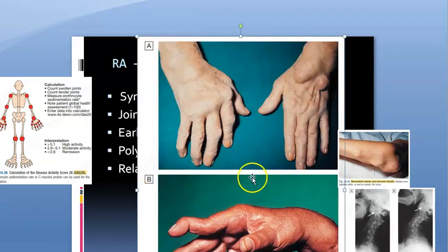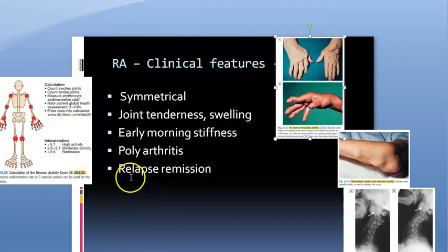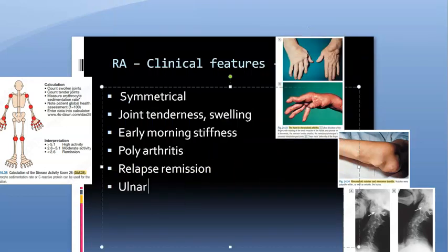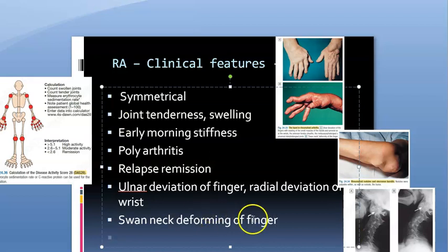So to summarize for the hand: there is ulnar deviation of the fingers and radial deviation of the wrist. There is also swan neck deformity of the finger, and a Z-deformity of the thumb.